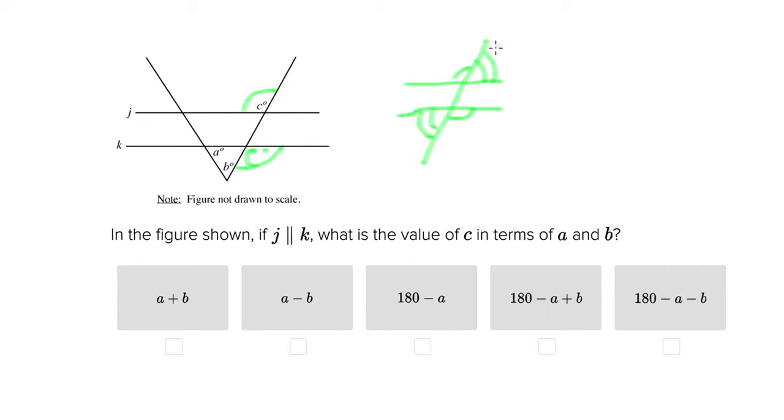They are outside the two parallel lines and opposite each other. So they're alternate and they're exterior to the space within the two parallel lines. And these two here would be equal and these two here would be equal.